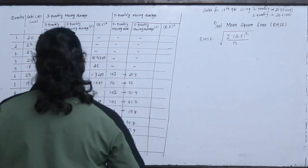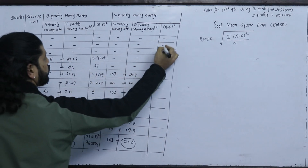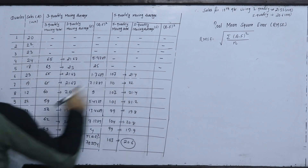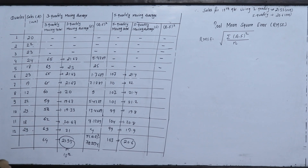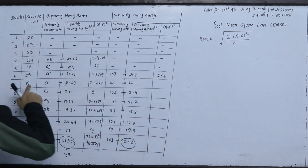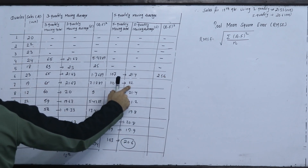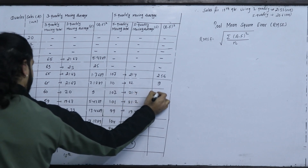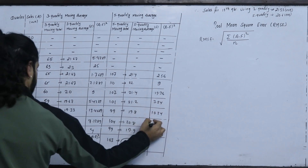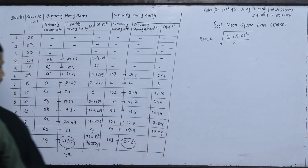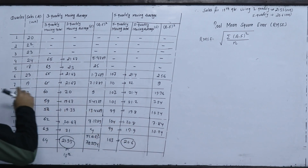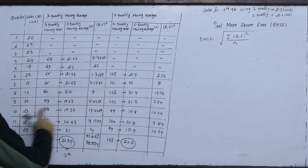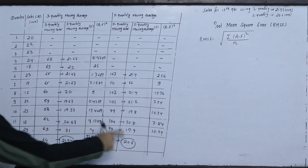For the 5-quarterly A minus F squared values: actual value minus forecast value. 23 minus 21.4 gives 1.6, squared gives 2.56. 19 minus 22 gives minus 3, squared gives 9. 22 minus 21.4 squared. 17 minus 21.4 squared. 22 minus 21.2 squared. 23 minus 19.8 squared. 18 minus 20.8 squared. 23 minus 19.9 squared. The sum of A minus F squared for 5-quarterly is 62.48.